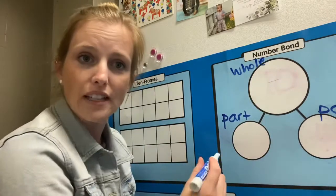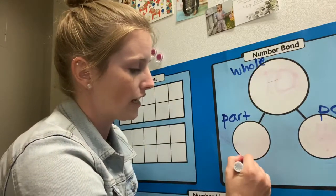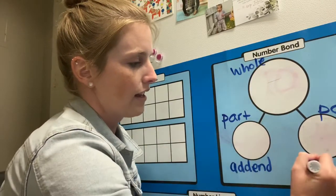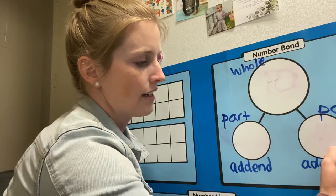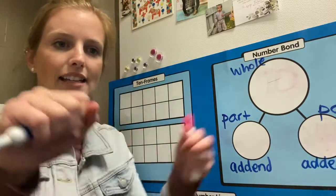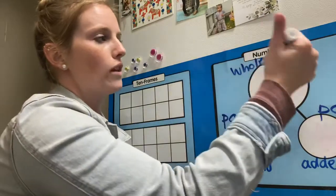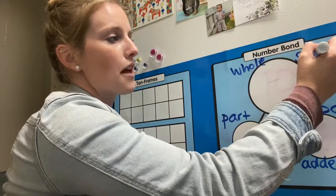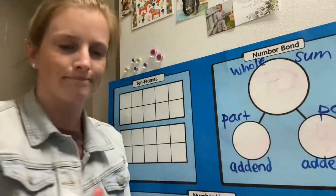But if you were to use the academic word in addition, this is called addend. Addend. Say addend. Addend, addend. And the whole, in addition, is called the sum. Sum.